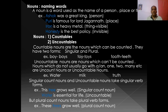Uncountable nouns are nouns which cannot be counted. Nouns which do not usually go with a, an, one, two, many, etc. are uncount nouns or uncountable nouns. For example: water — we can't count; milk — we can't count; truth — we can't count. These are the examples of uncountable nouns.